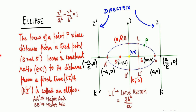Let's have an overview of what an ellipse is. This blue curve you can see is called an ellipse. The locus of a point P whose distance from a fixed point S and S-dash bears a constant ratio e, less than 1, to its distance from a fixed line KZ and K-dash Z-dash is called an ellipse. Just like we defined parabola in the previous video using locus, ellipse is also defined in terms of locus.